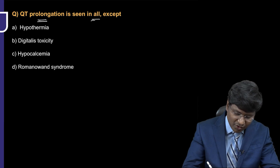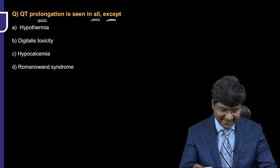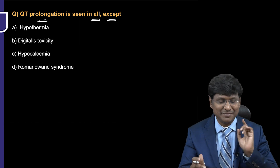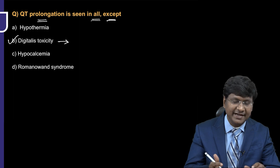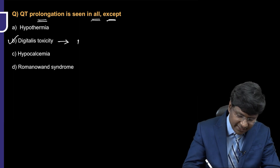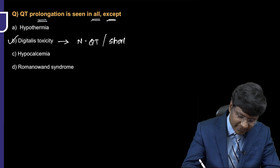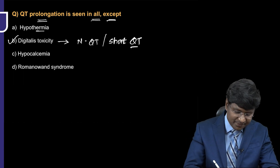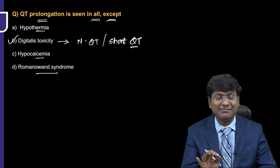QT prolongation is seen in all except which of the following: hypothermia, digitalis toxicity, hypocalcemia, Romano-Ward syndrome? In case of digitalis toxicity, you will have a normal QT interval or a short QT interval. That is what you observe in digitalis toxicity.